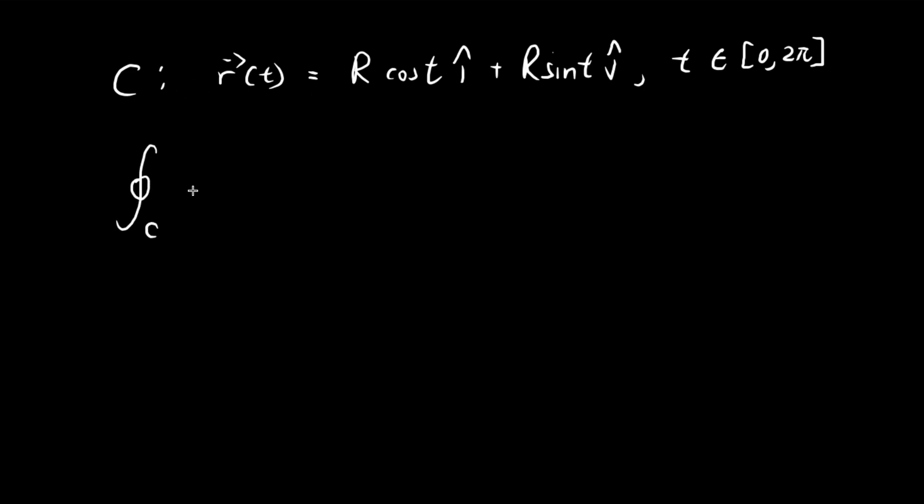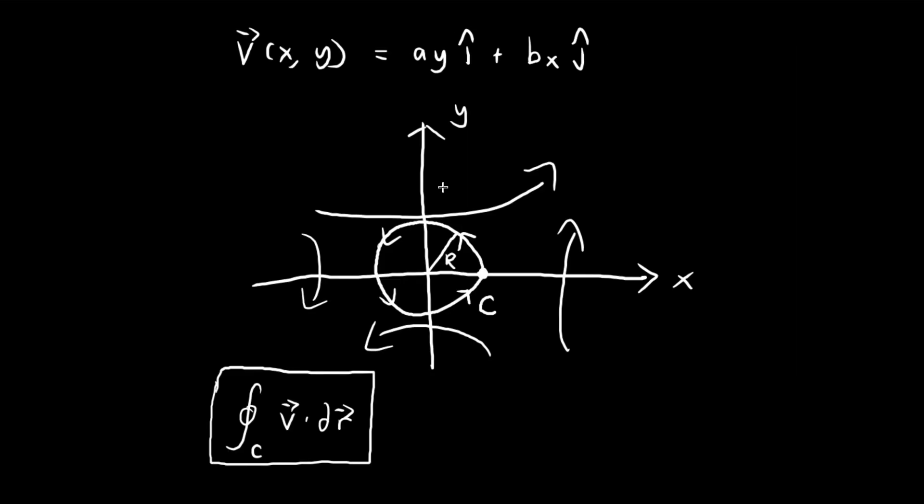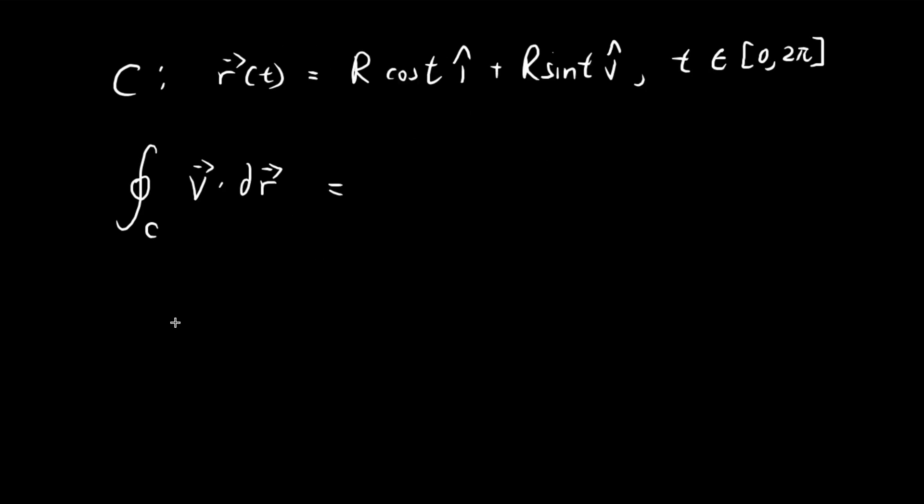This line integral by itself is an abstract concept. You have this vector field, you're going to chop up your path in tiny pieces, take the dot product, and add everything up. By itself, this is hard to evaluate. But we can use substitution to change this into a regular integral. We're going to use our parameterized path, so we have the vector field dot the derivative of the path with respect to t. Now this is going to be a normal integral with respect to t.